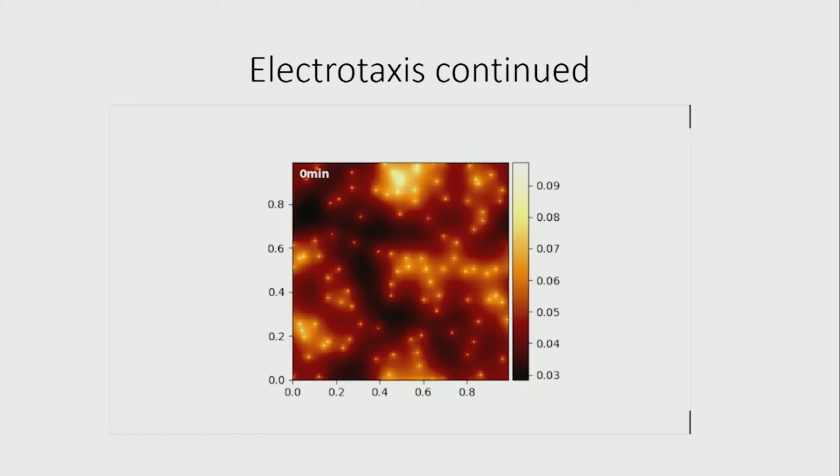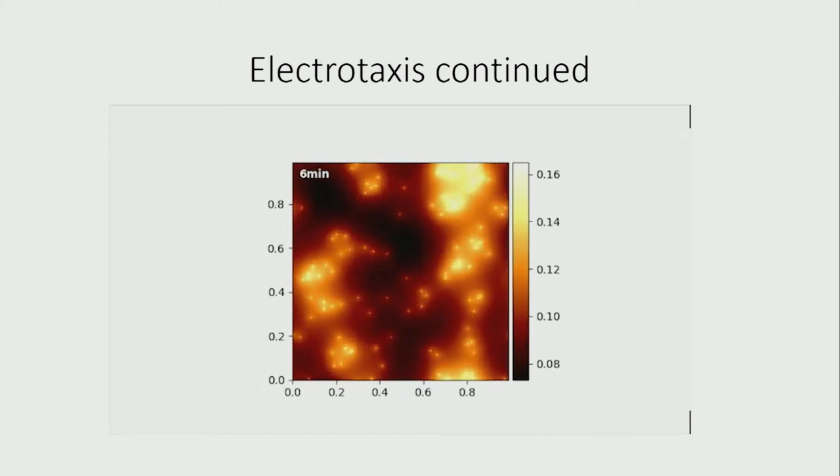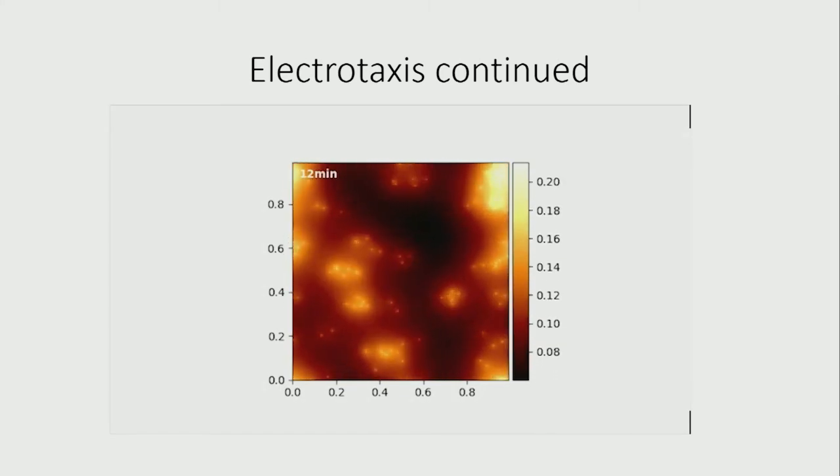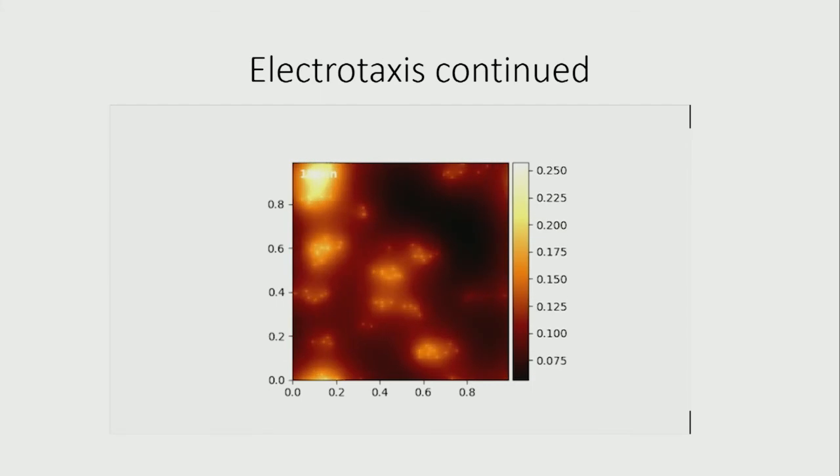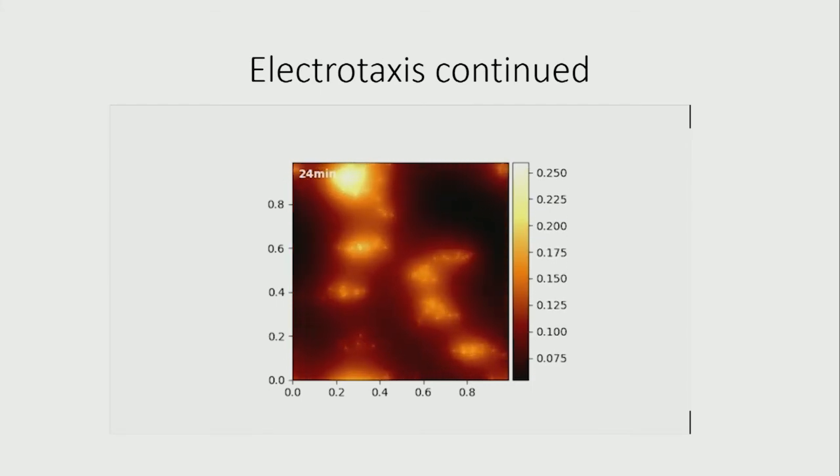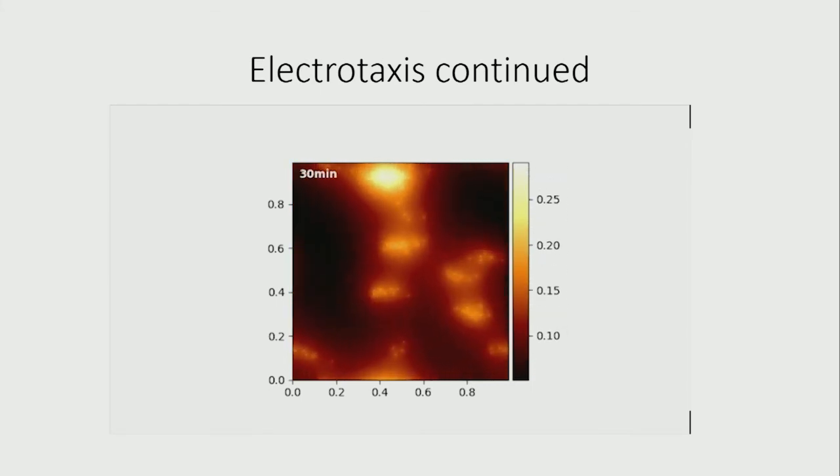So this is a more strong electric field. It's a video. Could you play the video? So this is just a short video of cells simulated under a more strong electric field. As you can see, motion is directed towards the right boundary, and that's essentially where the cathode is.